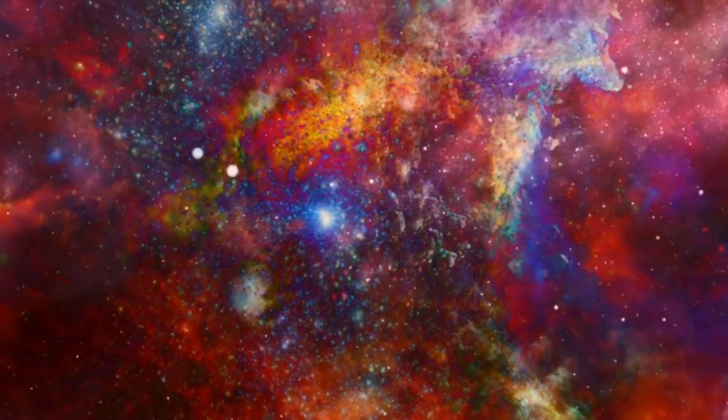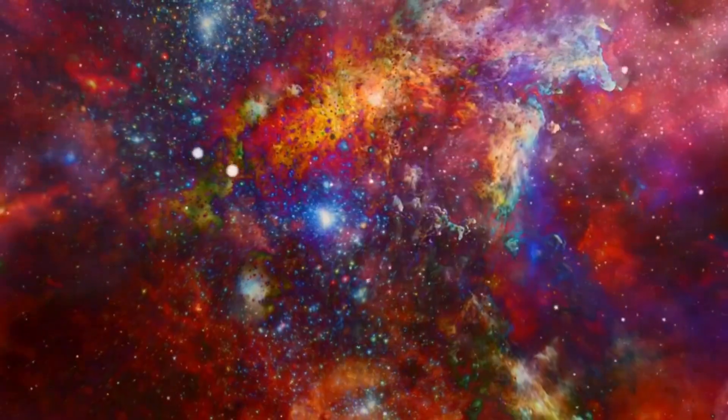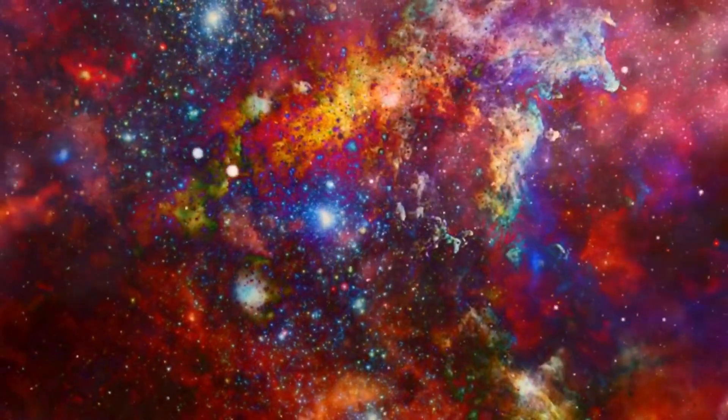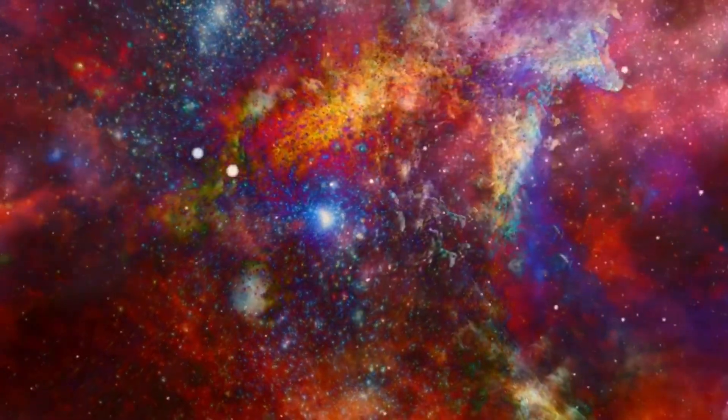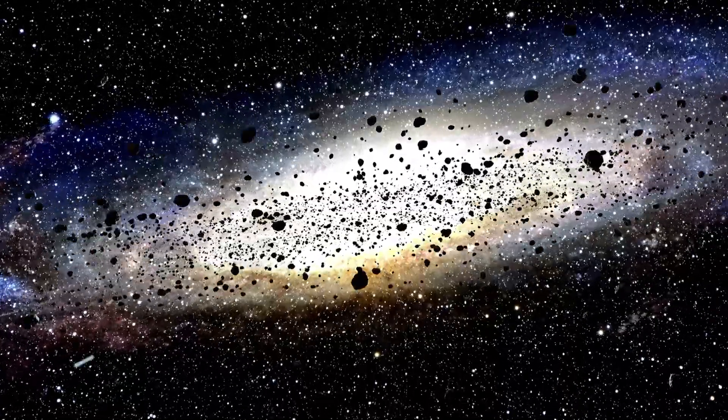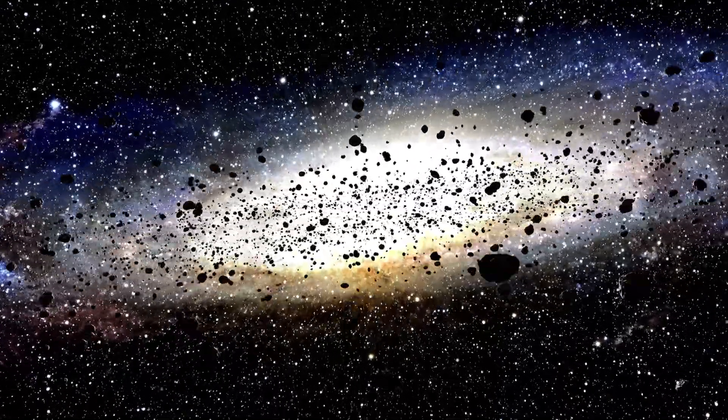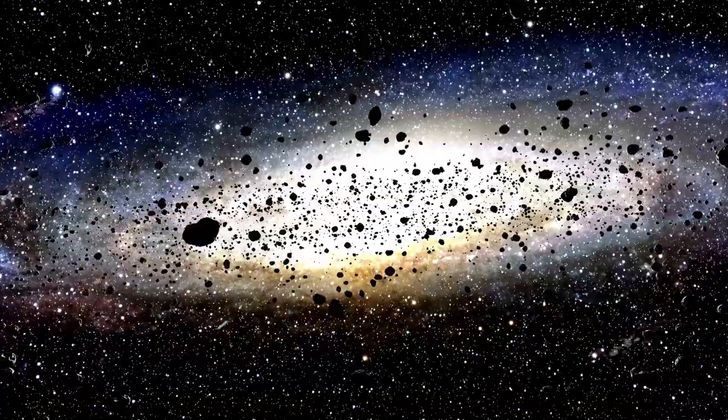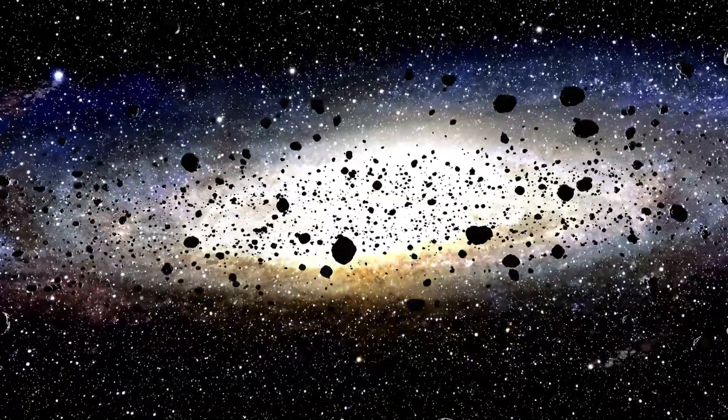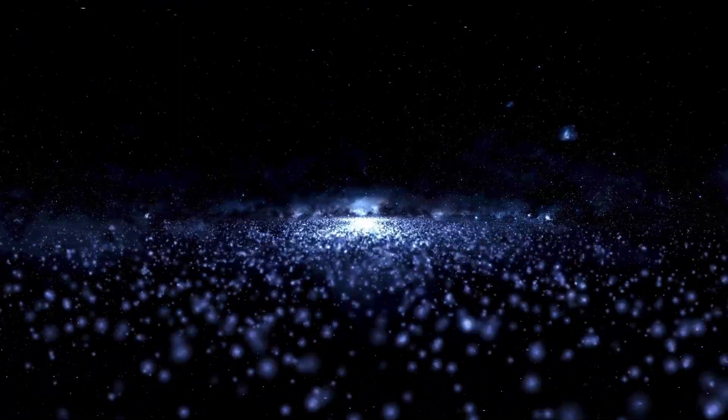To put this into perspective, imagine a star so massive that if it were to replace our sun, its surface would extend well beyond the orbit of Mars, enveloping not only Mars but also Mercury, Venus, and Earth. Betelgeuse's sheer size alone speaks to the tremendous scale of this celestial body and the extraordinary processes unfolding within it.